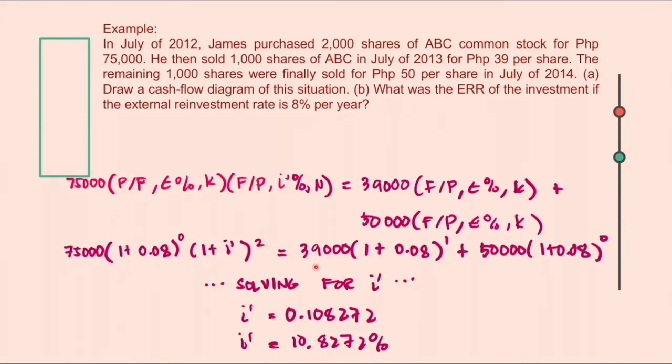Then for the benefits, these are the equations. And we can solve now for the value of i' and it's equivalent to 0.108272 or 10.8272 percent. So that is the ERR of this particular economic situation.